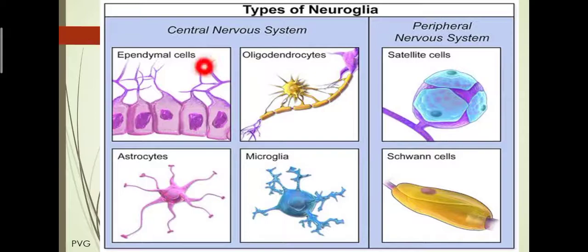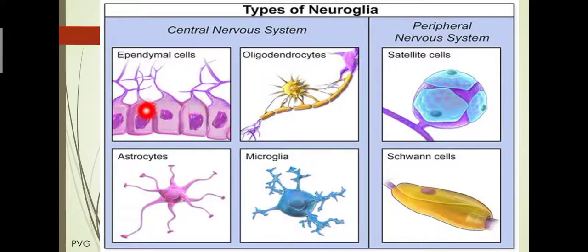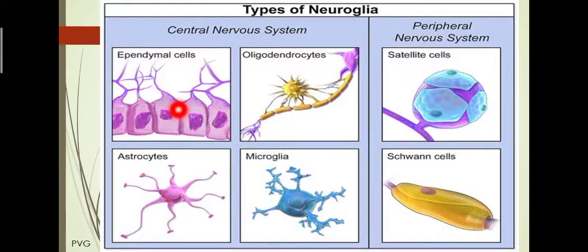The next type is ependymal cells. These are specific cells present in the ventricles of the brain and also surrounding the central canal of the spinal cord. They are squamous or columnar epithelial cells, but mostly ciliated epithelial cells. They are mainly responsible for production and circulation of cerebrospinal fluid (CSF) in the brain and central canal.